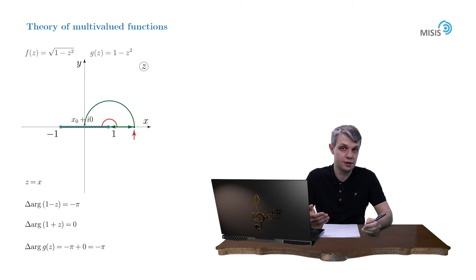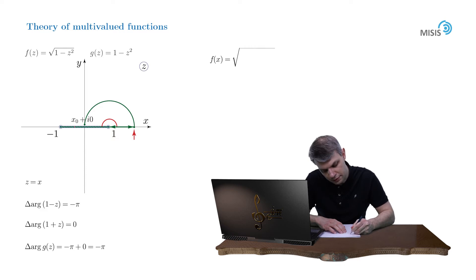And now we write down the general formula for the regular branch. F of x equals the square root of the modulus of the ratio of g of x divided by g of x0 plus i0 multiplied by e to the negative i pi by 2 and times f of x0 plus i0.